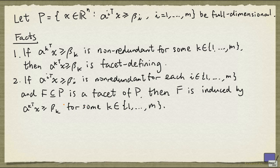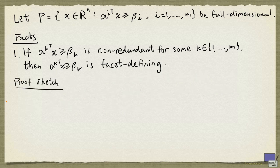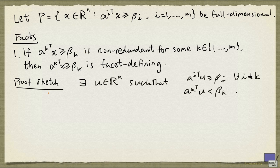We're now going to give a sketch of the proof of the first fact. The fact that this inequality is non-redundant means that there is an element in R^n that violates this, but satisfies all the remaining inequalities. Now because P is full-dimensional, we can find a point in P that satisfies all these inequalities strictly.